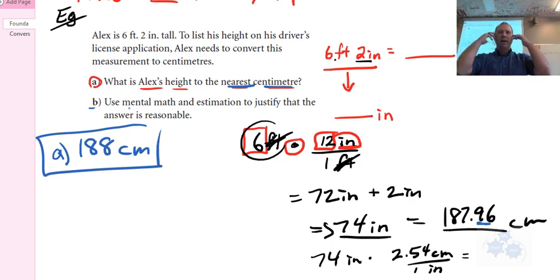You could even do 70 times 2.5. That's 140 plus 35 is 175, so it's close, right? So that's the sort of thinking that you would maybe do for that example.